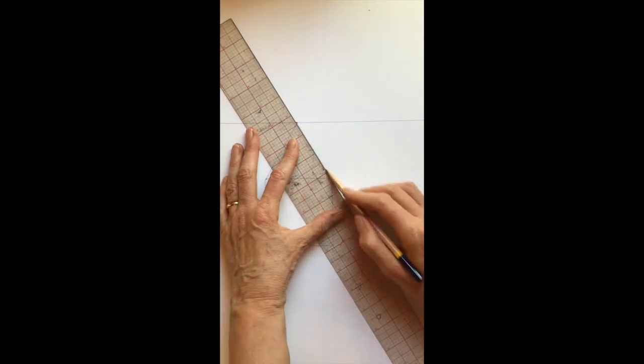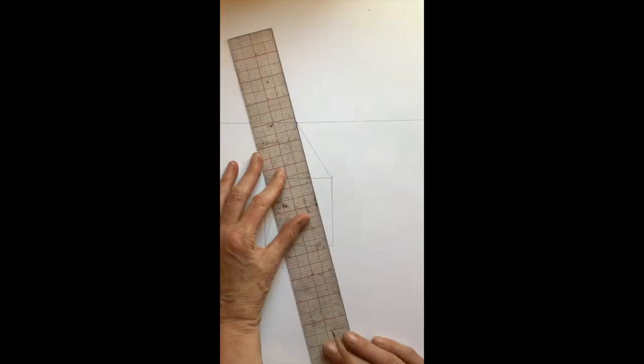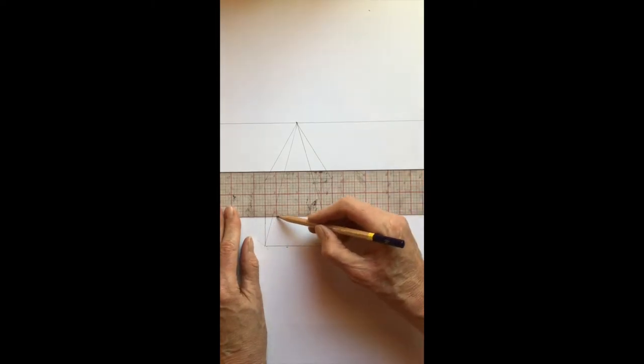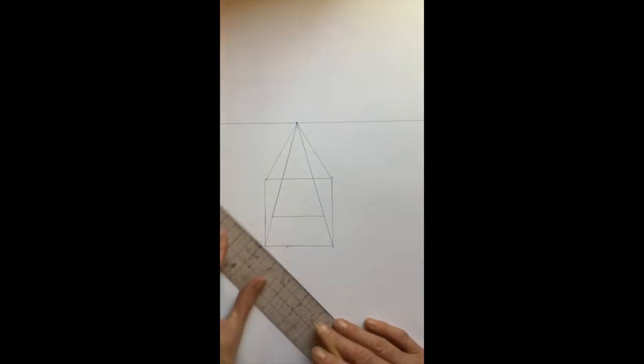I'm starting with a cube because a cube is a good basis for ellipses, since ellipses are circles in perspective and cubes are squares in perspective.